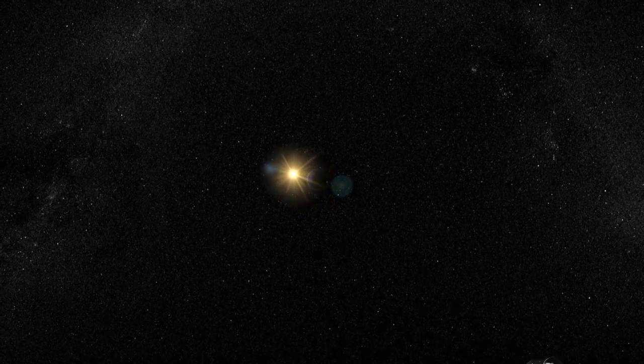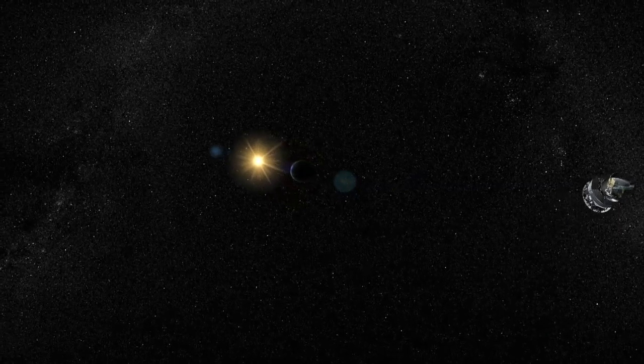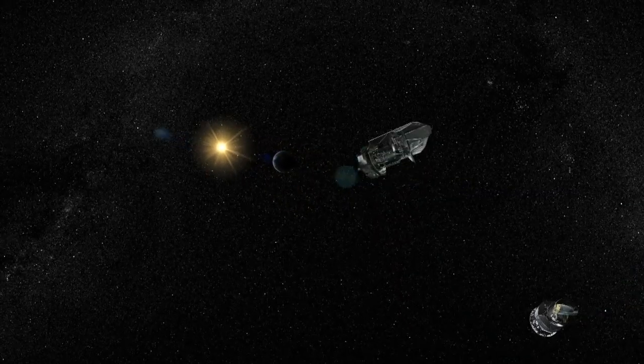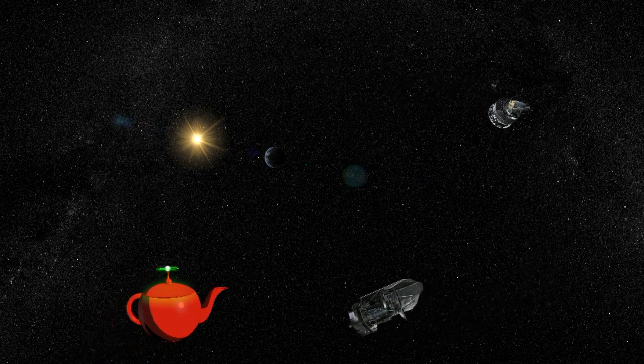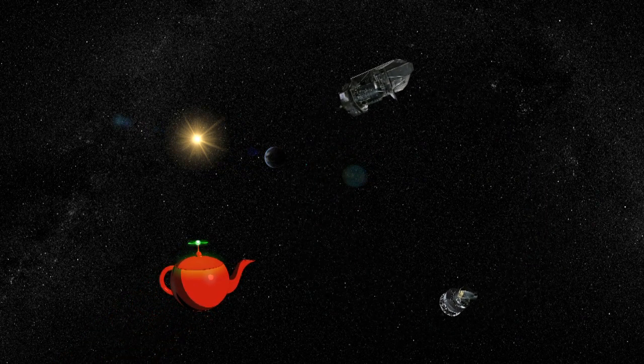On a routine survey mission of Sol System Orion Spur, Teapot 14 Alpha 6 encountered two unidentified spacecraft orbiting a common centre of mass 1 million miles from Orion M41-3, Earth.